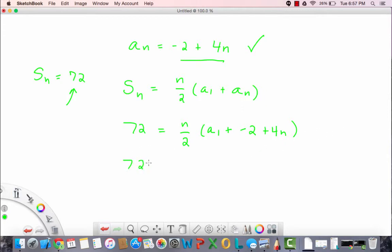Let's simplify this a little bit. 72 equals n over 2 times a sub 1. Now a sub 1, if you don't recall, it doesn't matter because we can find a sub 1 by using our explicit formula. Let n equal 1, sub that into the equation. a sub 1 equals negative 2 plus 4 times 1, which is negative 2 plus 4, which is 2. So we get to sub the 2 in here, subtract this 2, and then we add 4n.